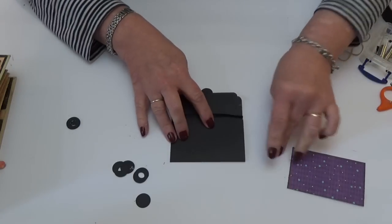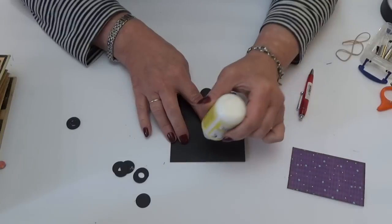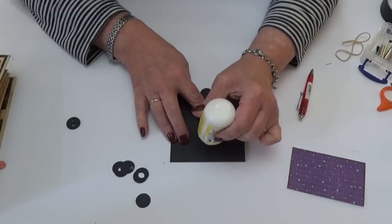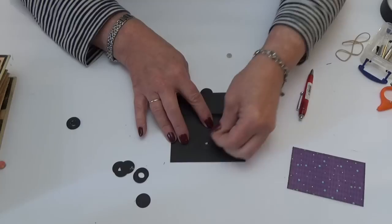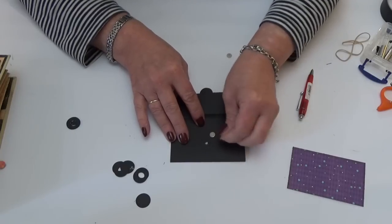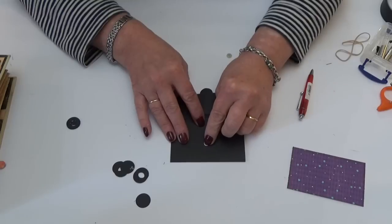And you could do that with a little bit of glue and leave it to dry if you wanted to. And your aim is to stick the magnet right in the middle of that circle that you've drawn.